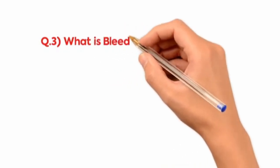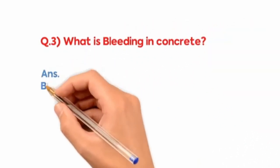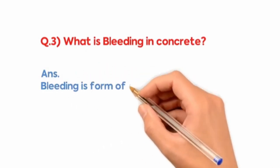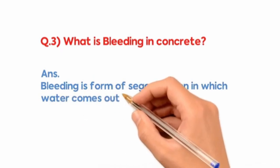What is bleeding in concrete? Bleeding is a form of segregation in which water comes out of the surface of concrete.